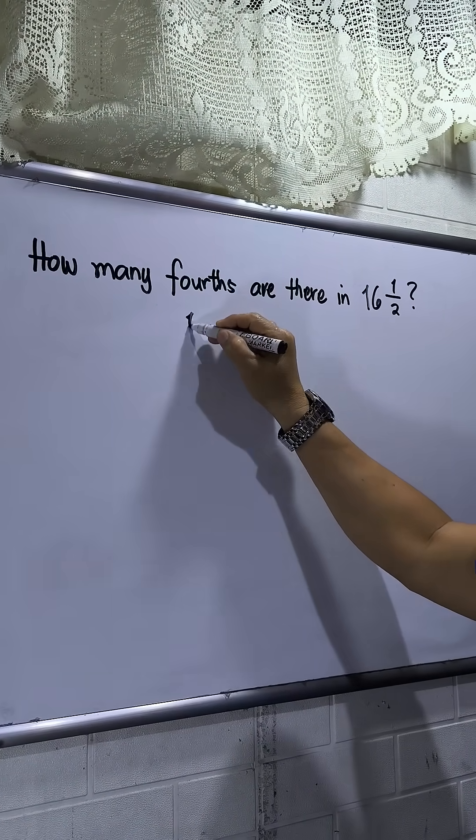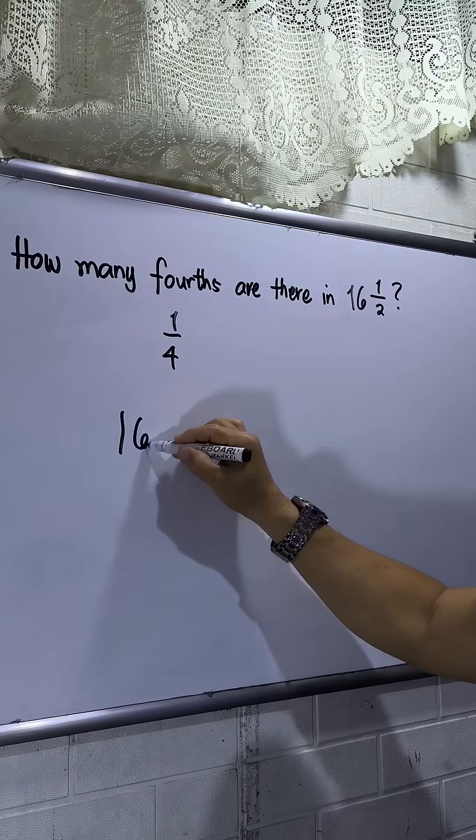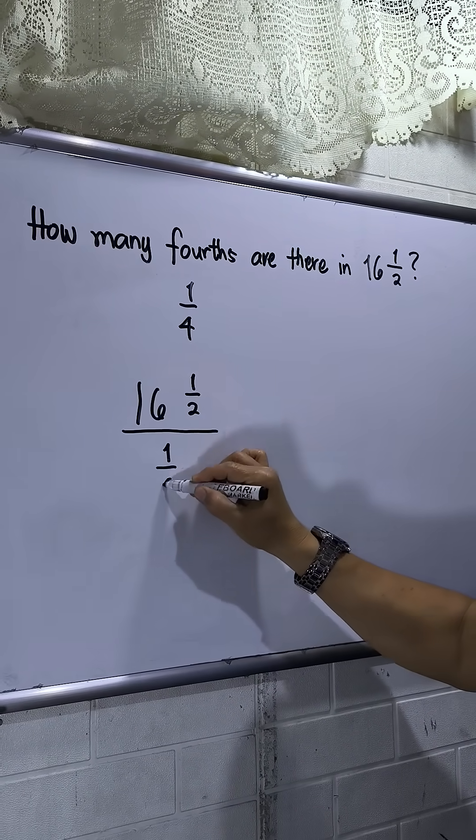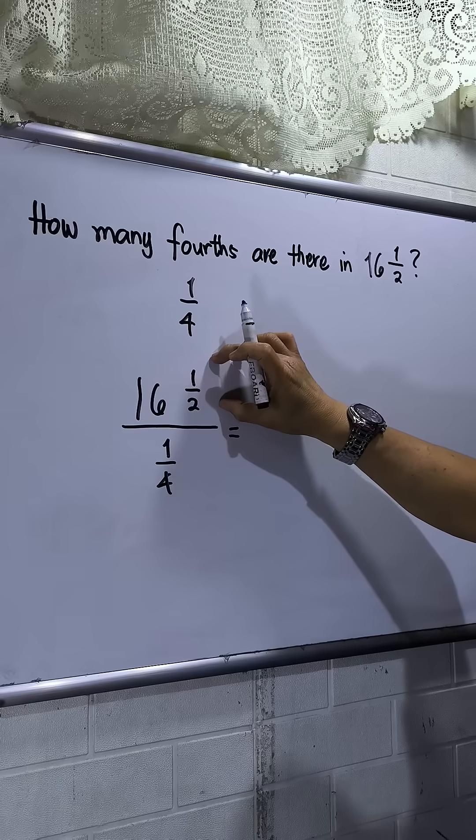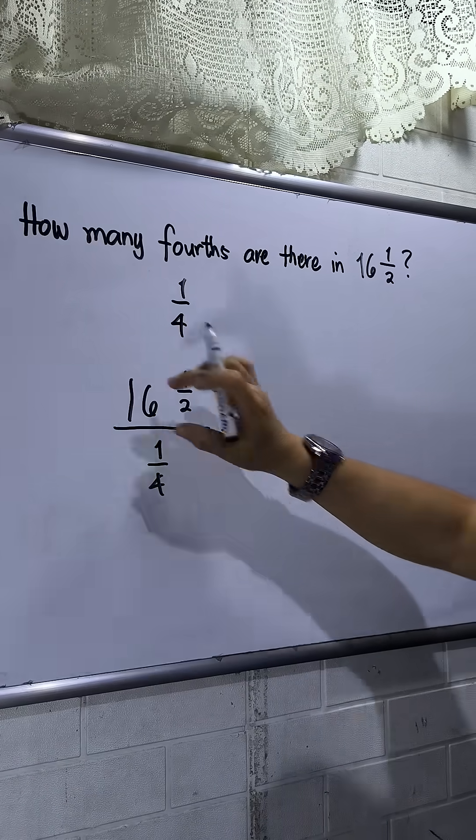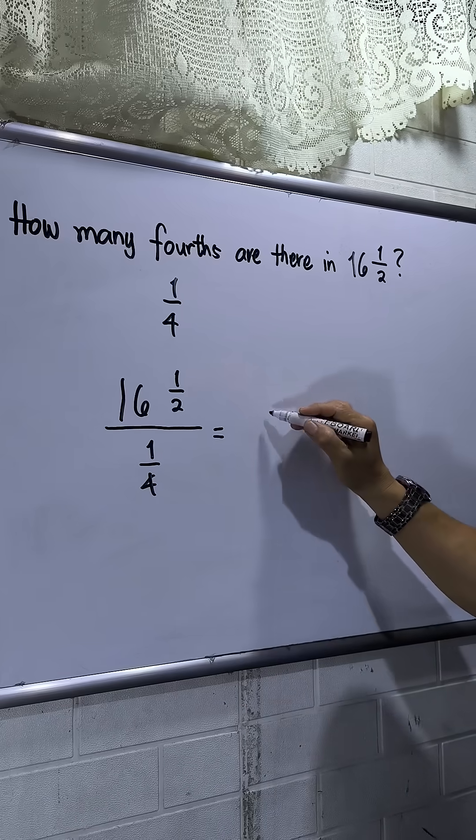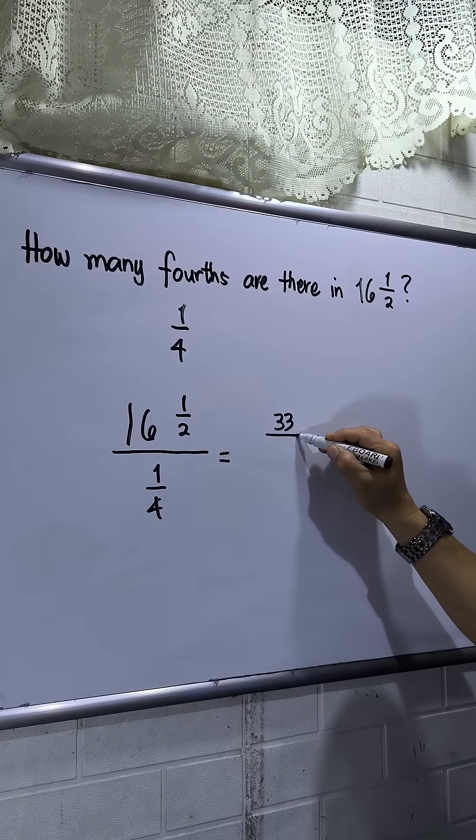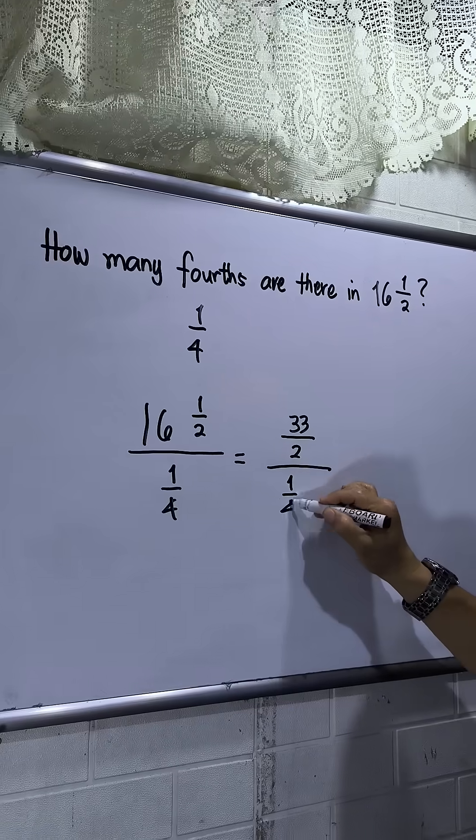So fourths means 1 over 4. So meaning 16 and 1 half is divided by 1 fourth. Take note this is a mixed number so I have to rename this one to improper fraction. So 16 times 2 plus 1, so this would be 33 over 2 is divided by 1 over 4.